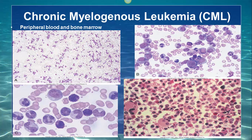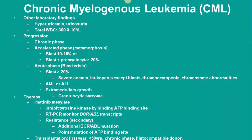Hyperuricemia and uricosuria — uric acid in the urine — are due to increased cell turnover, so patients can develop secondary gout and kidney disease. When a patient's WBC level increases very high, such as 300 × 10⁹ per liter, they can have vascular stasis and intravascular consumption of oxygen by the leukocytes.